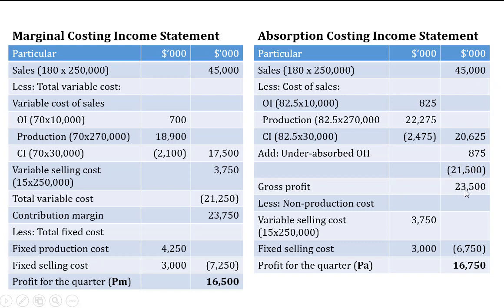Subtracting the adjusted cost of sales from sales gives us the gross profit. After the gross profit, we deduct the non-production costs: variable selling cost ($15 × 250,000) and fixed selling cost ($3 million). This gives a profit for the quarter of $16,750 thousand under absorption costing. Note that the two profits differ: $16,500 under marginal costing versus $16,750 under absorption costing.